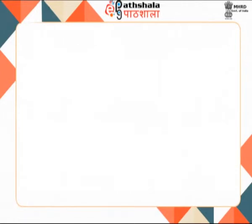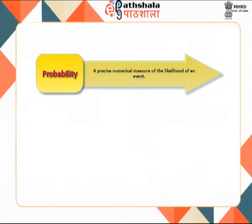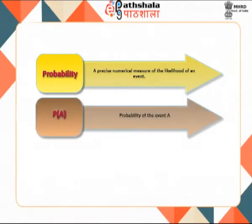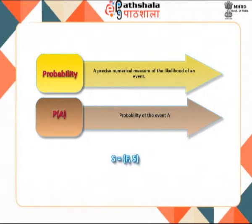Having understood the concepts of experiment, sample space and events, we can define probability as a precise numerical measure of the likelihood of an event. The probability of event A is denoted by P(A). For example, in an experiment of testing a battery to have voltage within prescribed limits, if the battery has the required voltage, event S (success) has occurred; if not, event F (failure) has occurred. Therefore, the sample space contains F and S.